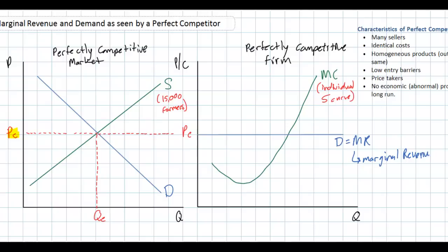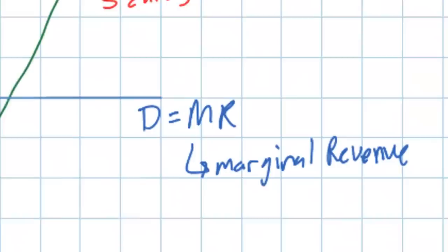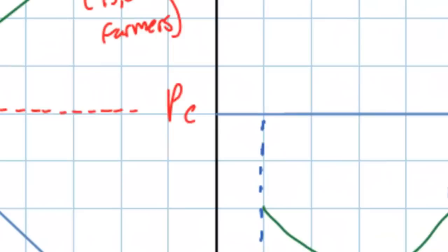Marginal revenue is the change in total revenue attributable to a particular change in quantity. One dairy farmer can sell as much milk as he wants at the equilibrium price PE. Whether he sells 1,000 liters or 5,000 liters, the price is always PE. If this dairy farmer increases or decreases his output, it has no effect on the market price — he is such a small player that even a fivefold increase in output will not change the market price. Therefore, the demand for an individual perfectly competitive firm's output is perfectly elastic and horizontal at PE.